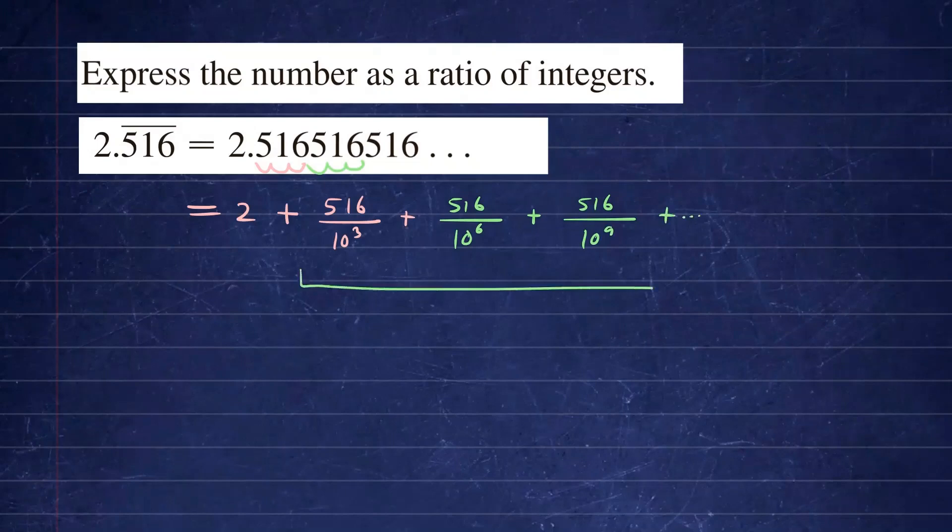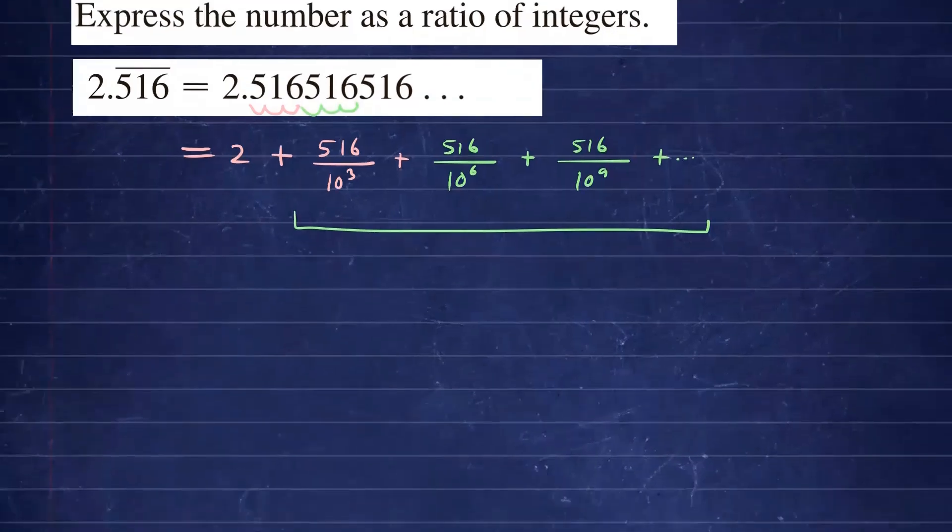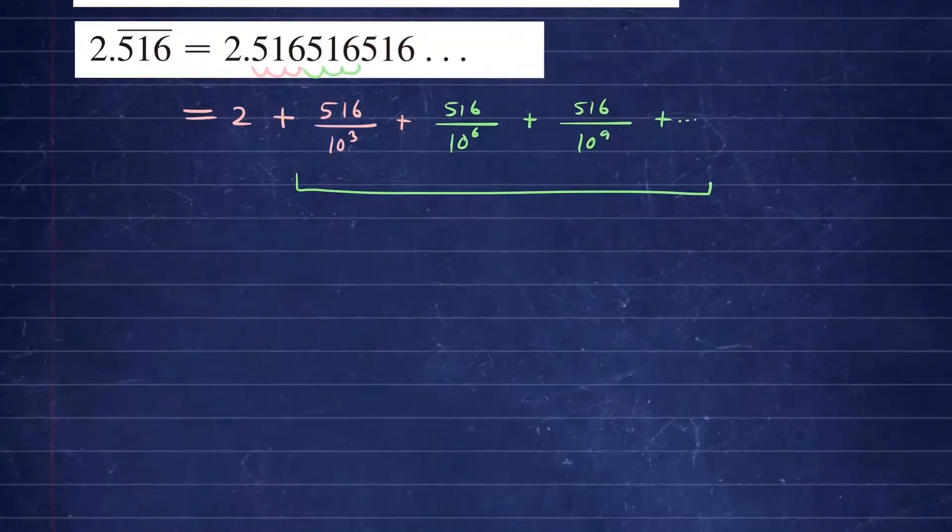The goal is to rewrite this as a geometric series. So you want to find your first term and the common ratio R. As you can see, our common ratio to go from the first term to the next term will be the following. So if we have this term 516 over 10 to the 3rd power, well, how do we generate the next term?